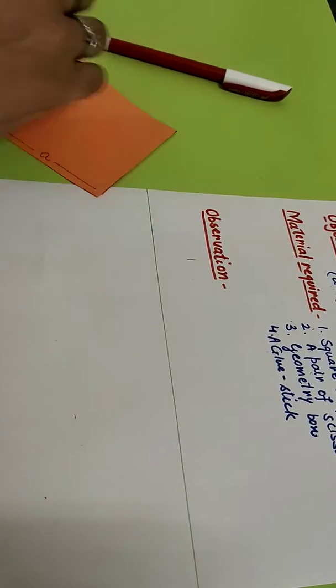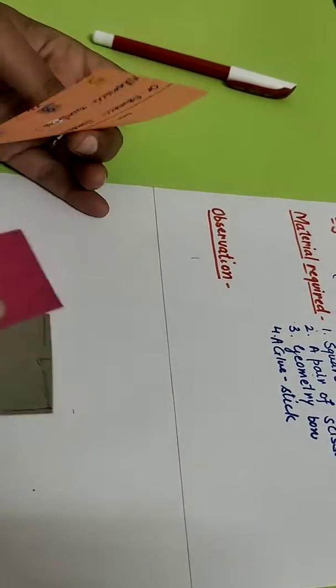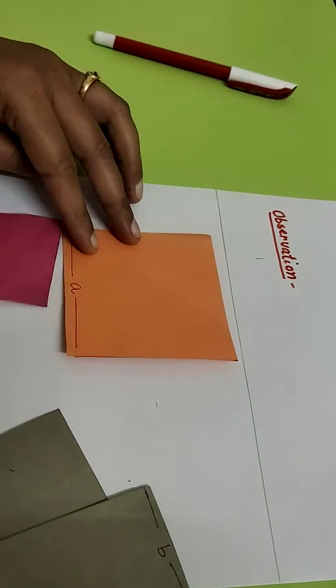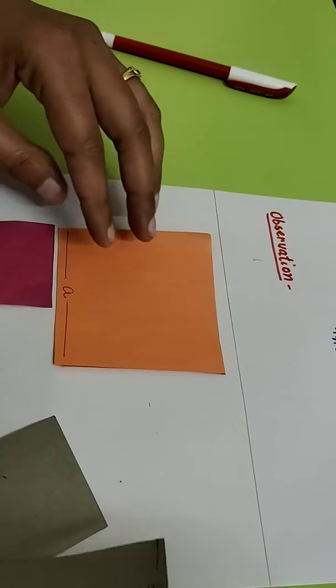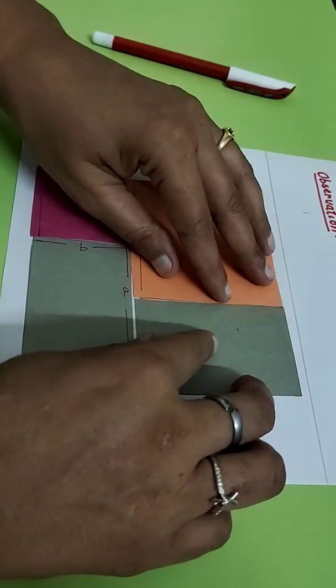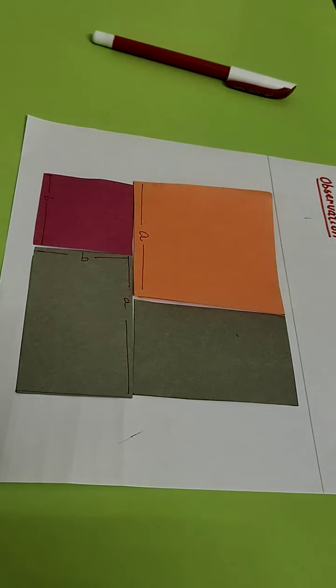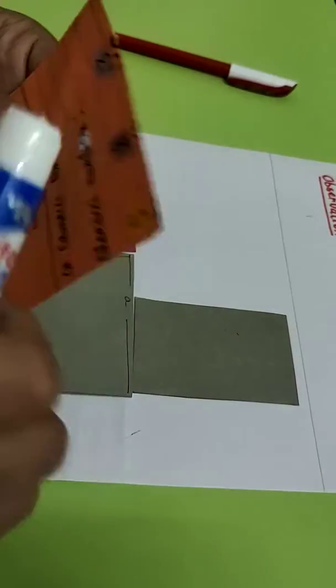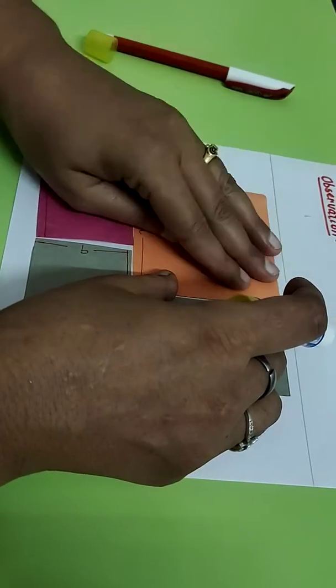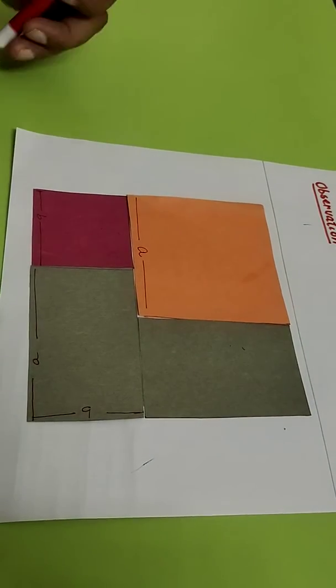Now we have to arrange these 4 pieces in a manner so that we can get a big square. I am putting this here and you can put the second one here, it is up to you. Next one I am putting here and the last one I am putting here. You can paste these pieces with the fevicol stick.